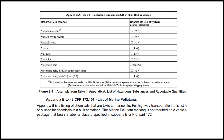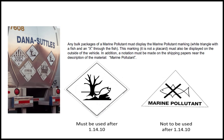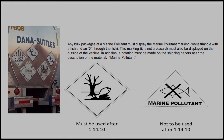Appendix B to 49 CFR 172.101 — List of Marine Pollutants: Appendix B is a listing of chemicals that are toxic to marine life. For highway transport, this list is only used for chemicals in bulk containers. The marine pollutant marking is not required on a vehicle or package that bears a label or placard specified in subpart E or F of Part 172. Any bulk packages of a marine pollutant must display the marine pollutant marking — a white triangle with a fish and an X through the fish. This marking is not a placard but must also be displayed on the outside of the vehicle. In addition, a notation must be made on the shipping paper near the description of the material: 'marine pollutant.'